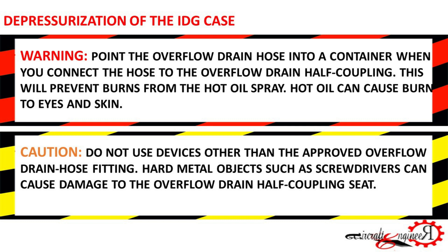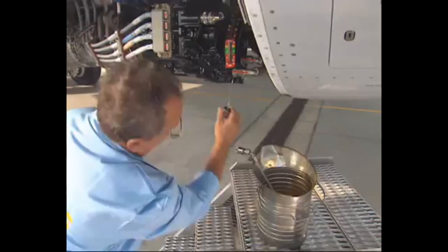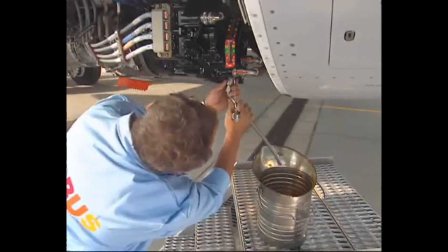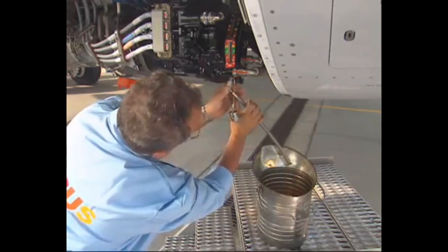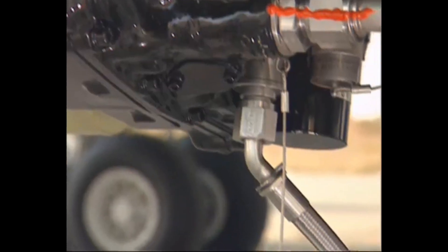Warning: point the overflow drain hose into a container when you connect the hose to the overflow drain half coupling — this will prevent burns from the hot oil spray. Hot oil can cause burns to eyes and skin. Caution: do not use devices other than the approved overflow drain hose fitting. Hard metal objects such as screwdrivers can cause damage to the overflow drain half coupling seat. Remove the dust cap from the overflow drain port, then connect the overflow drain hose on the overflow drain port. This action will depressurize the IDG. Some oil may come out from the overflow drain hose. Ensure the tube is not bent and the end is not immersed in the oil.